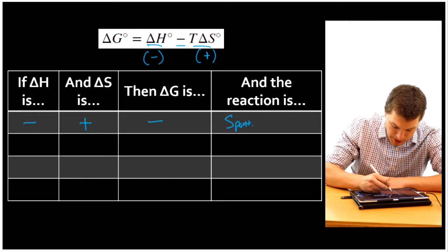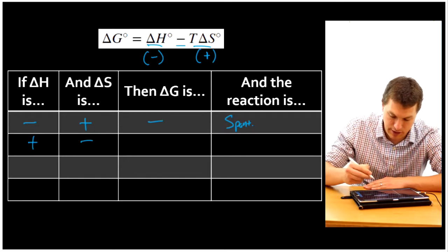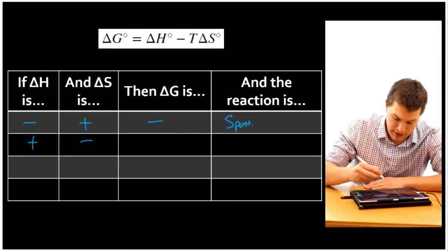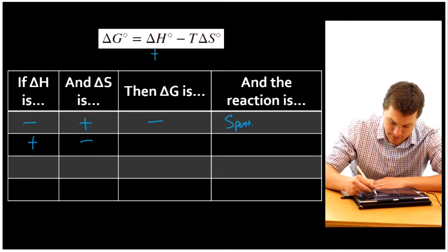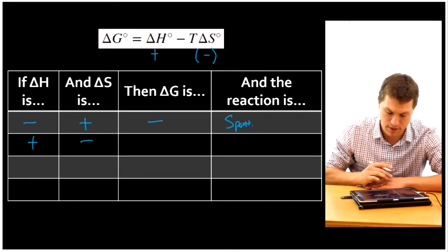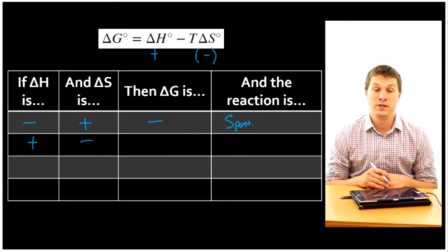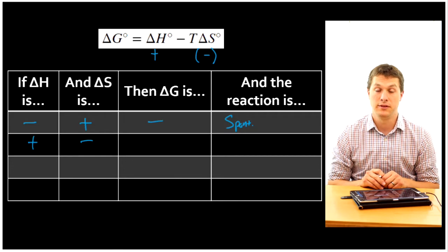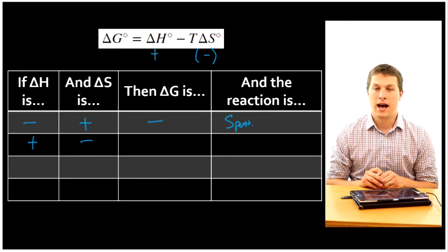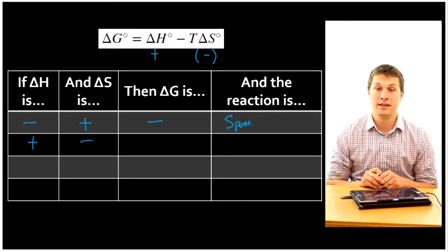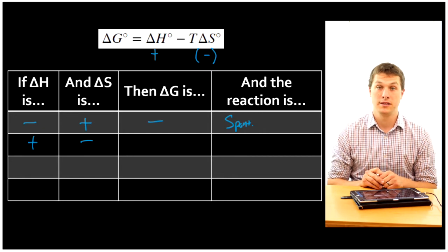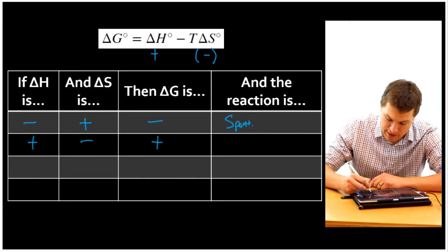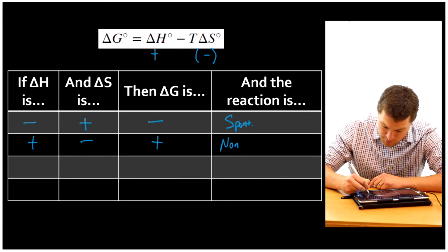Now let's look at the case where we have a positive delta H and a negative delta S. Our enthalpy is positive, and we're subtracting a negative number — which means we're adding to a positive number. For example, positive 10 minus negative 5 gives positive 15. So we always get a positive delta G in this case, and that means the process is always non-spontaneous.